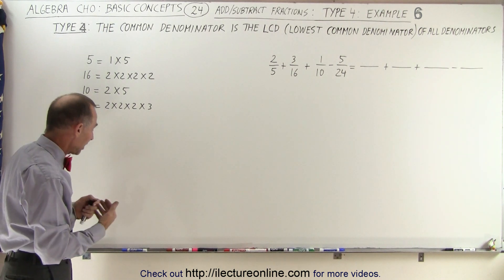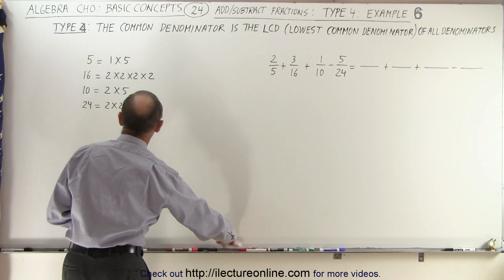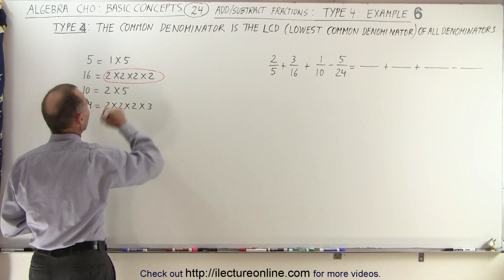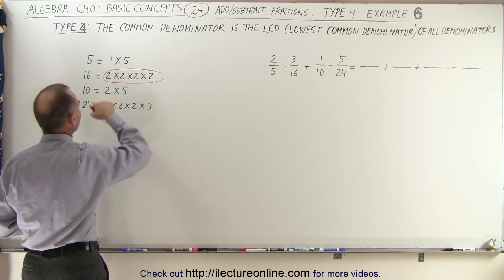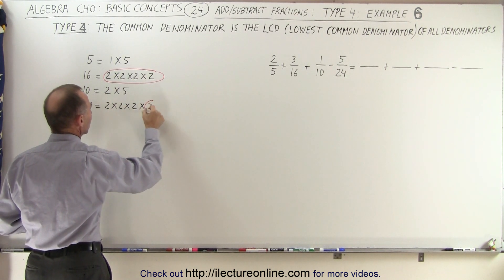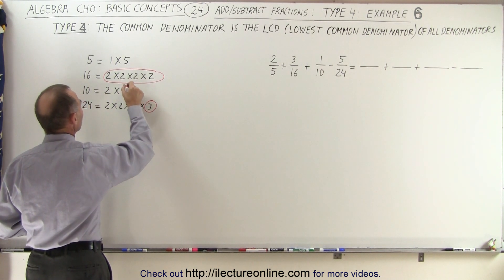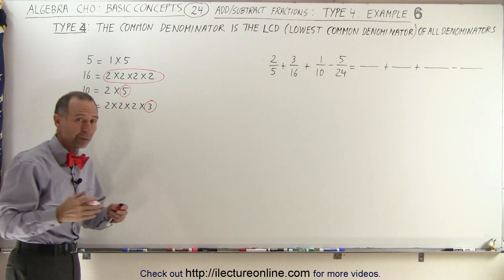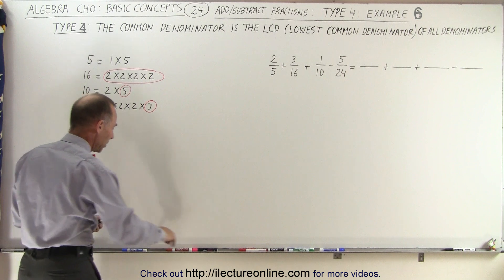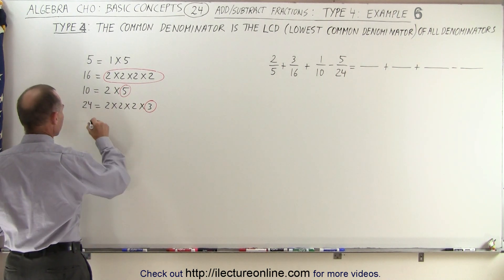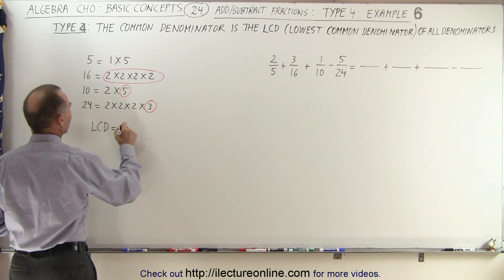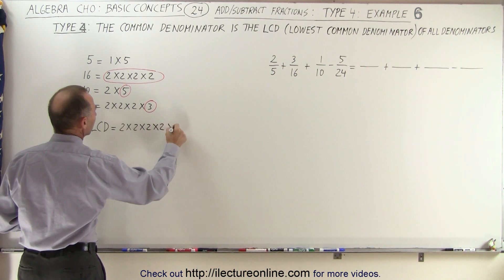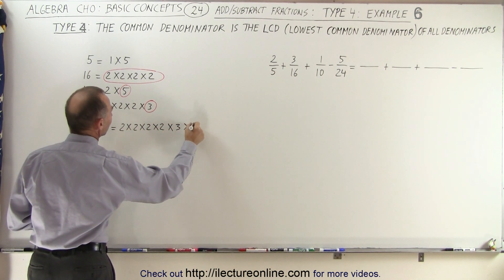Now we find how many times each factor appears. The factor 2 appears four times in 16 — that's the most — so we can ignore all other places where 2 appears. We have the factor 3 appearing once and the factor 5 appearing once. Even though 5 appears in 10 as well, we only need to account for it one time. So the lowest common denominator is equal to 2 times 2 times 2 times 2 times 3 times 5.